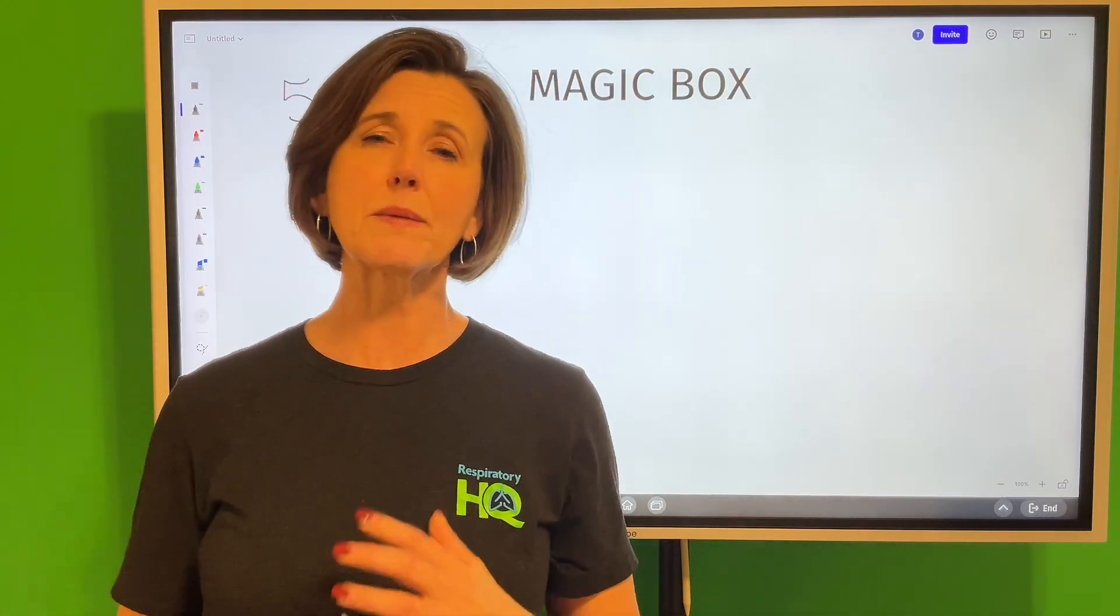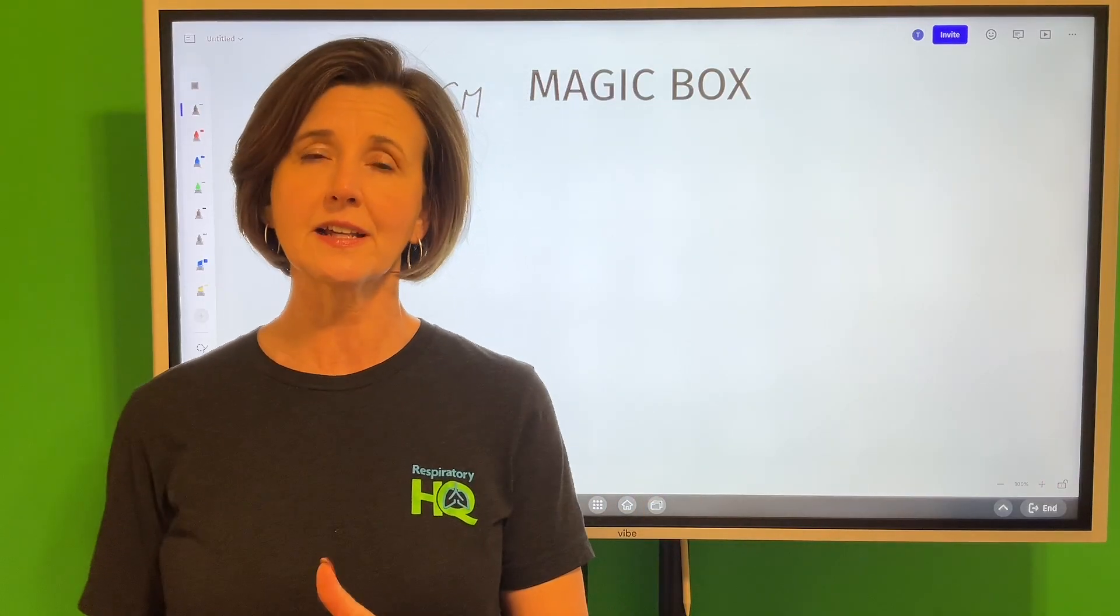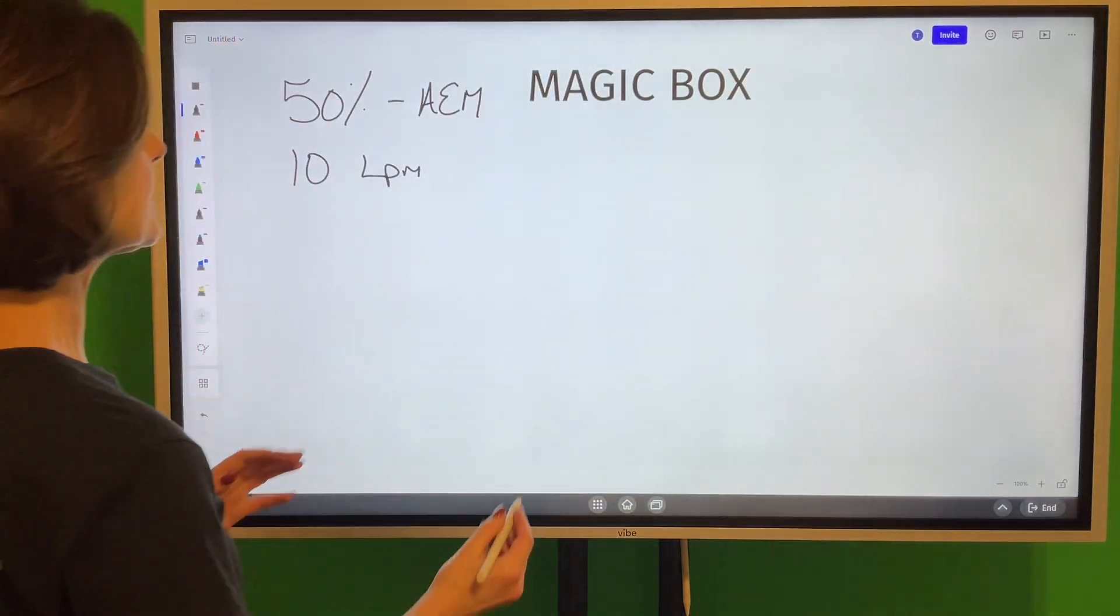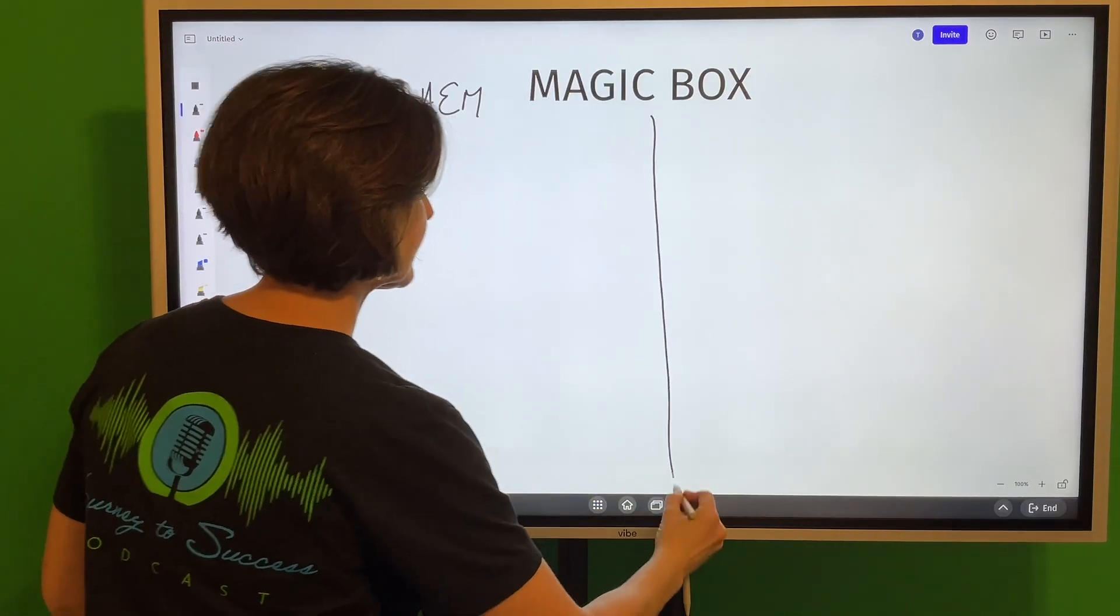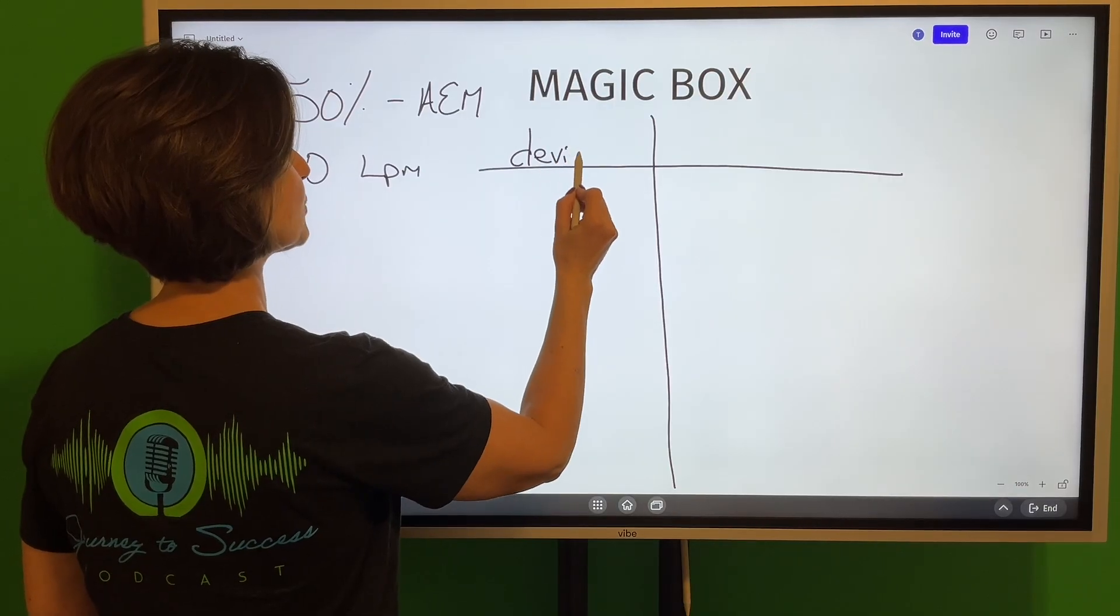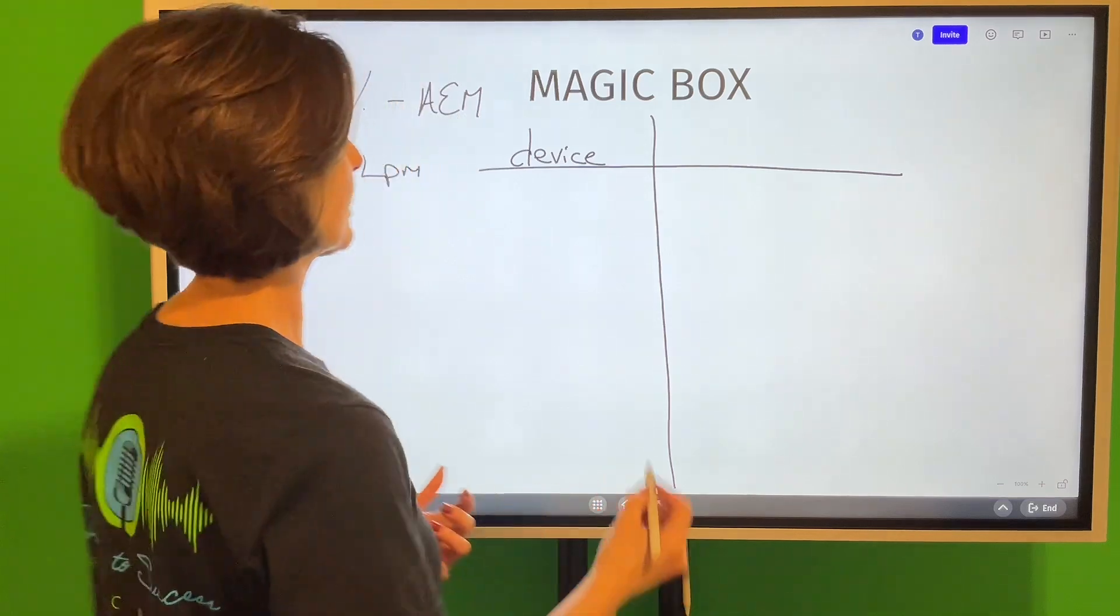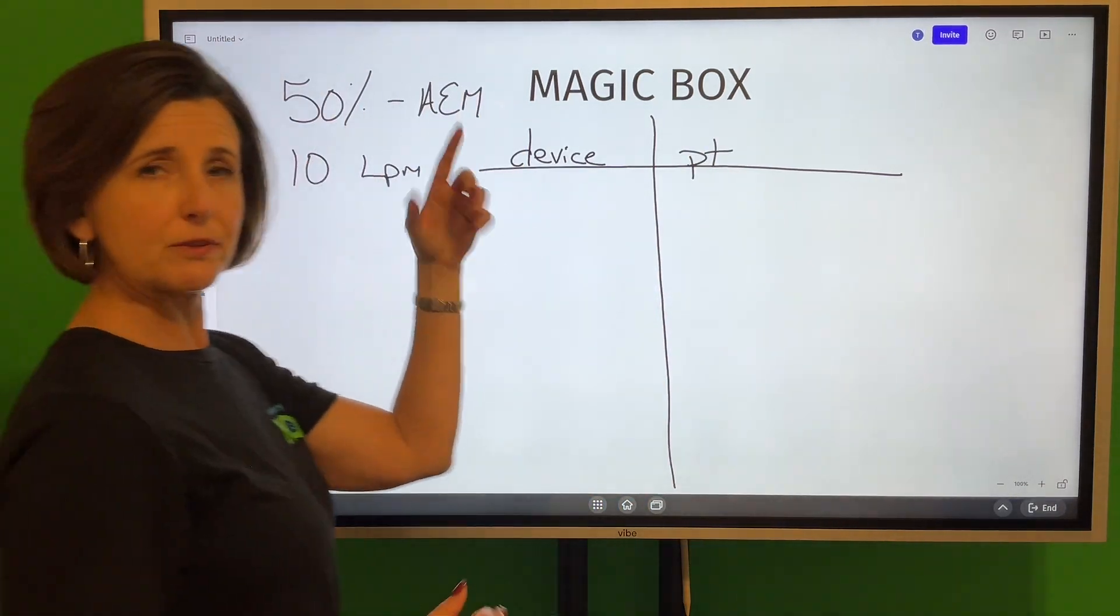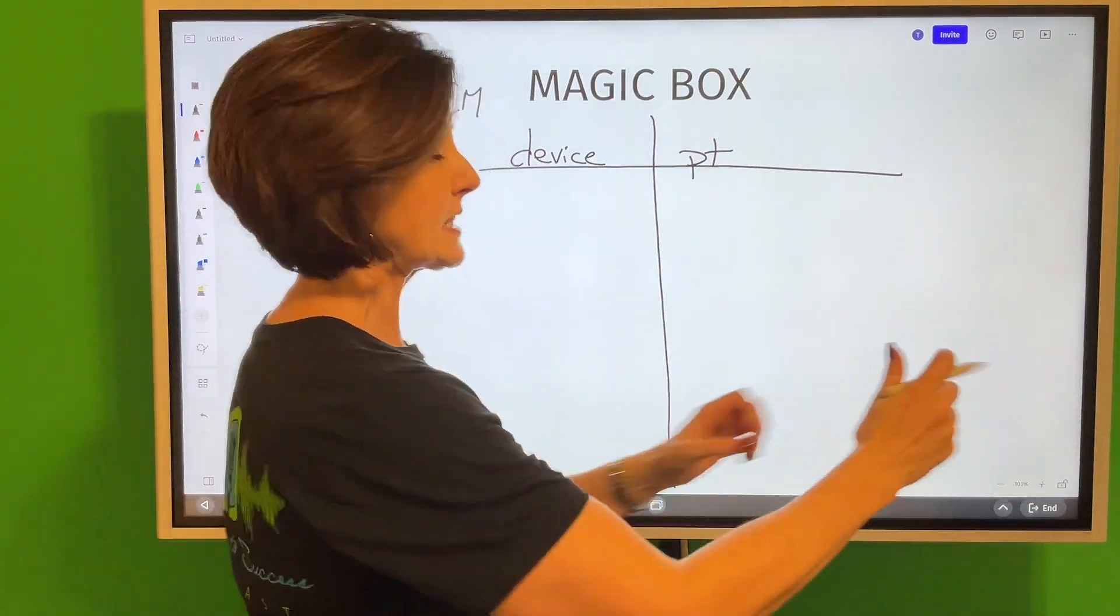Okay, what the magic box does for us is it tells us the total flow from the device, and then you're going to place that device on the patient. So we've got two things we really need to make sure we know about when we're dealing with an air entrainment system: we have to know the total flow from the device we're dealing with and we have to know the patient's inspiratory flow. So I'm going to divide it into the device, meaning this 50% will pretend like it's a Venturi mask, and then the patient's inspiratory flow.